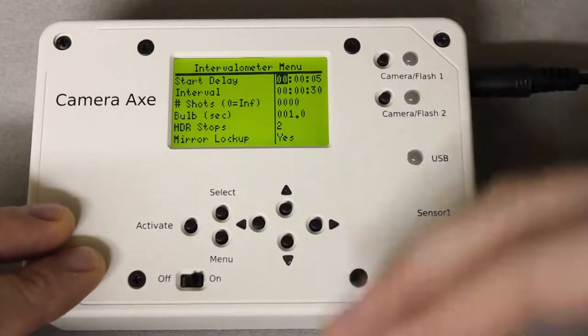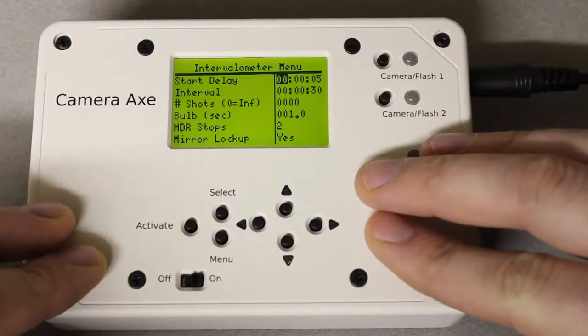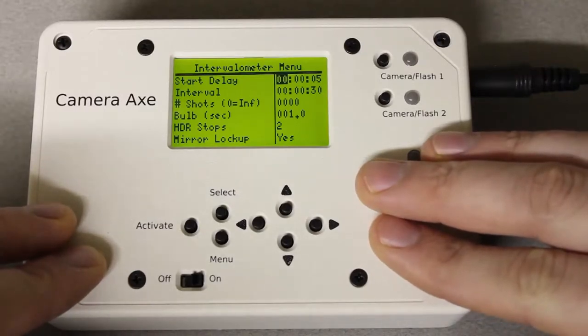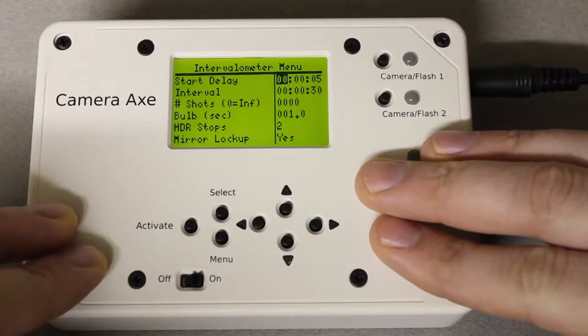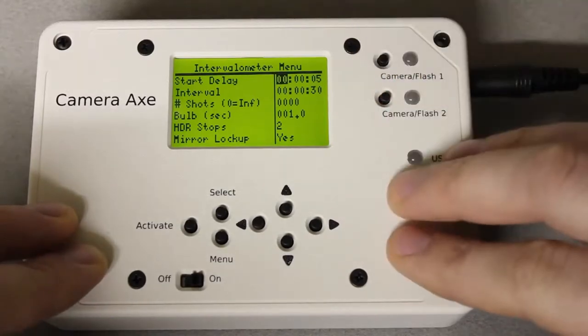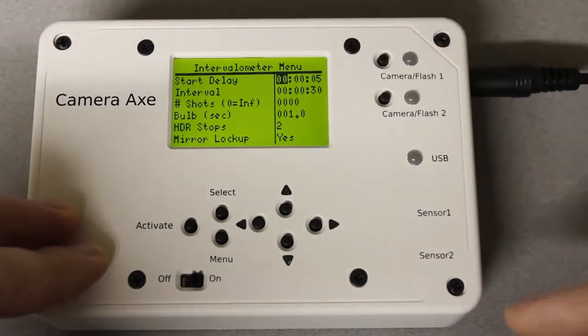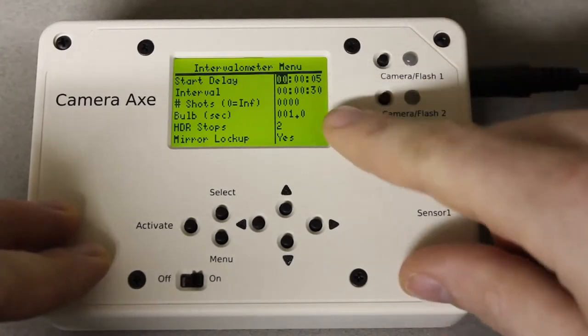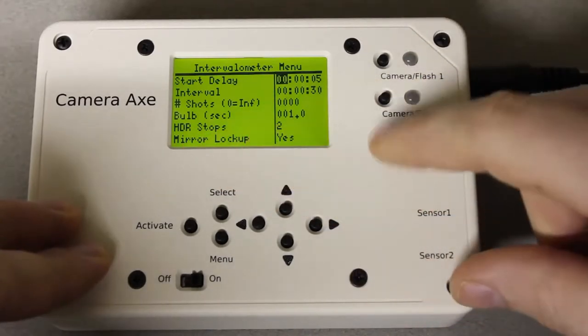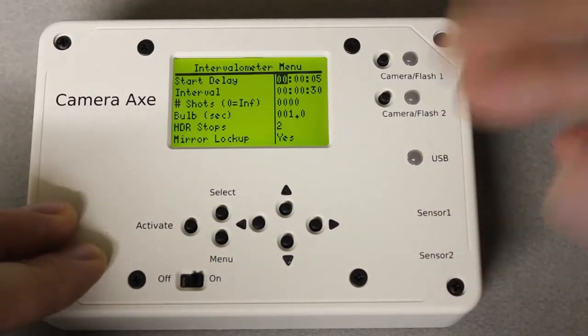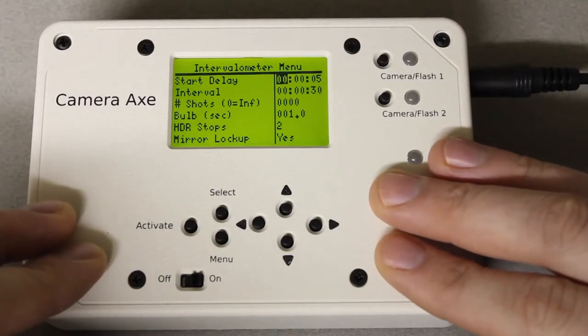If you just have ideas that you think would make this menu better, please share them with me either on the forums or as a post to this video. I'm always looking for new software based ideas that will make the Camera Axe better. I think that this is probably one of the best intervalometers I've seen. I haven't seen others with like these HDR settings. It's a very flexible system but I'm always open to make it better and share your ideas. Thanks for watching.